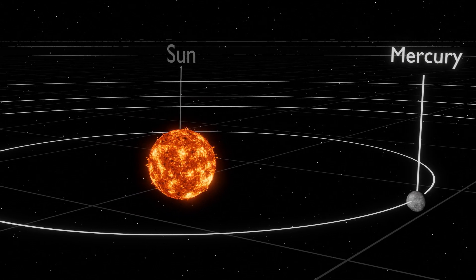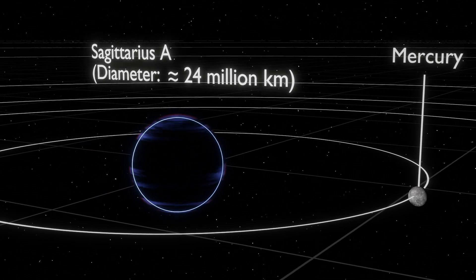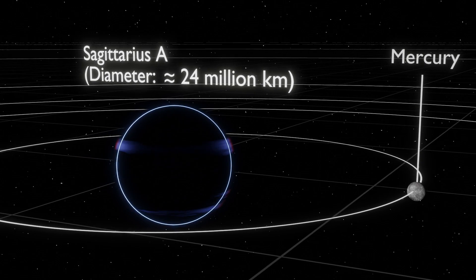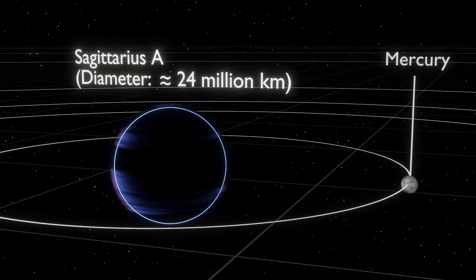Sagittarius A, located at the center of our own Milky Way. Its size would push it to approximately halfway between the Sun and the orbit of Mercury.